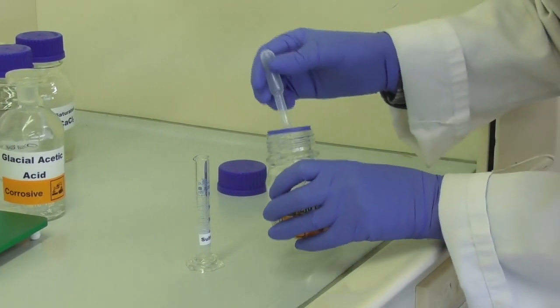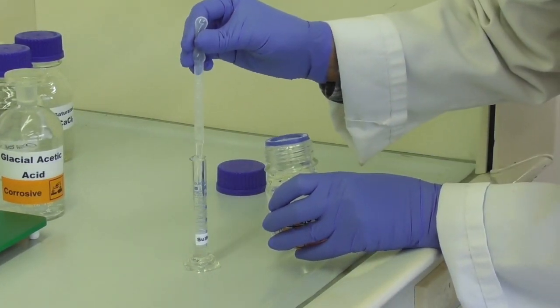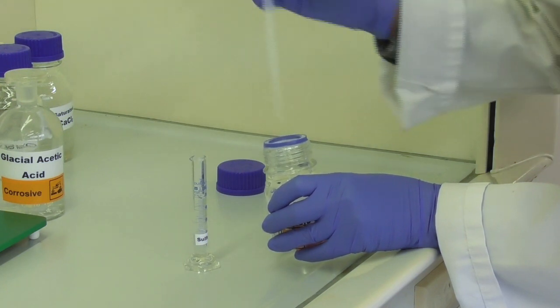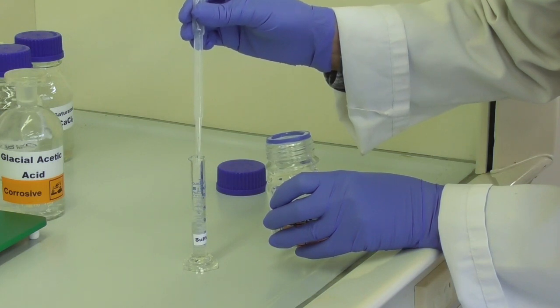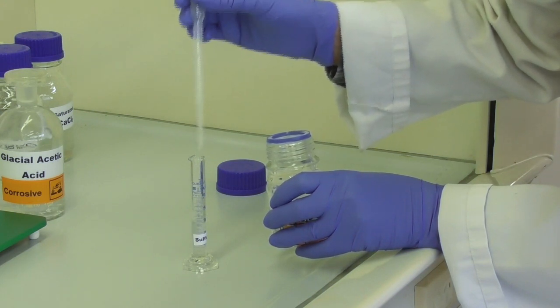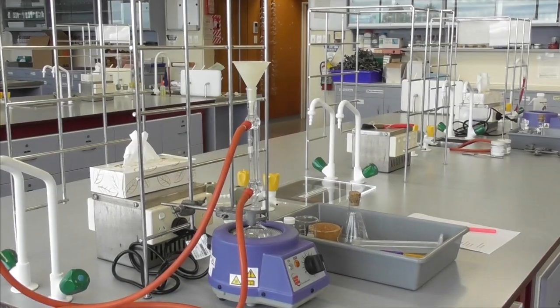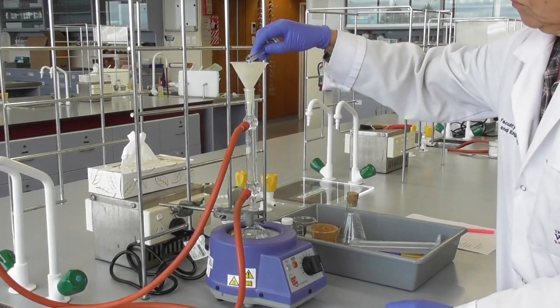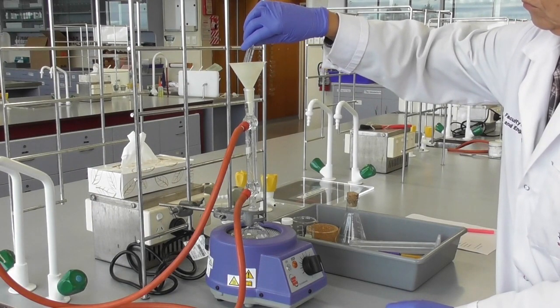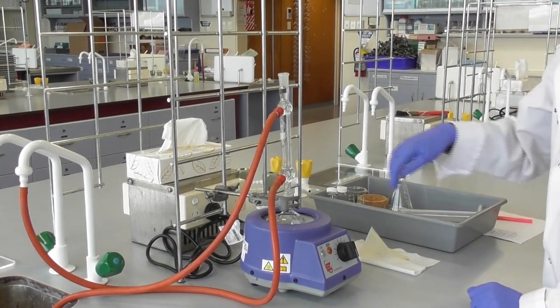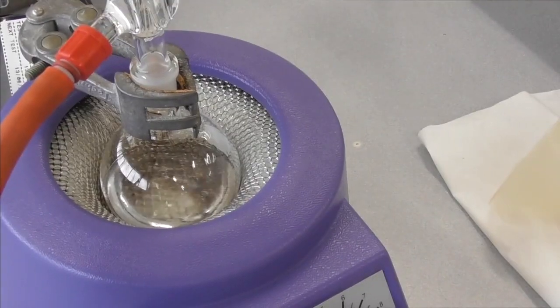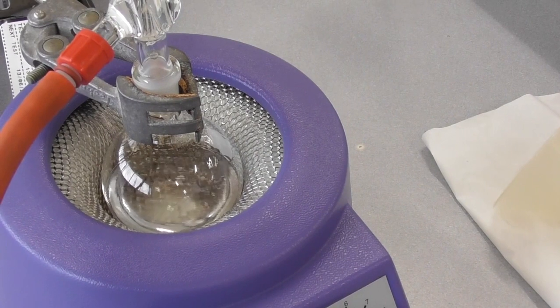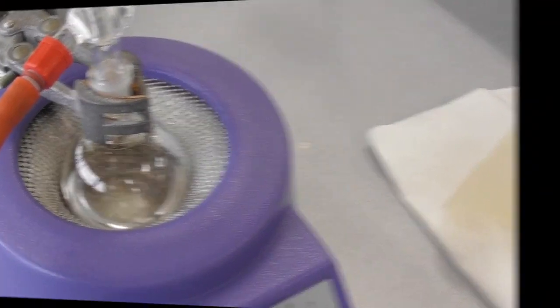The last reagent is 3ml of concentrated sulfuric acid. We measure this out with a dropper and then take it back to the bench and add it into our flask. We remove the funnel and turn on the heating mantle. We have to wait until the solution is boiling and refluxing before we start the timer.